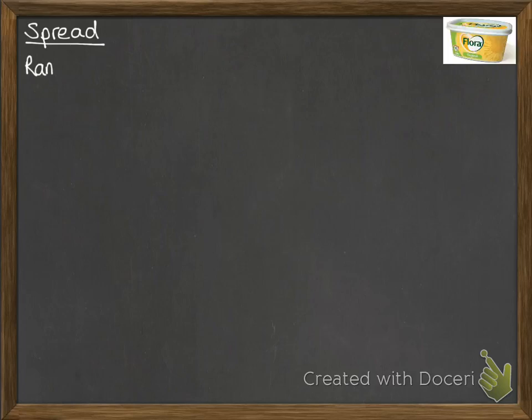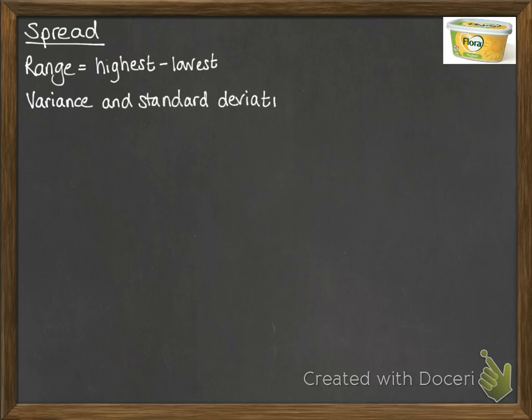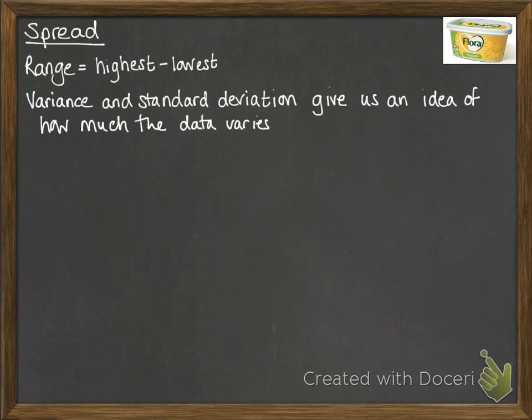So we need to be able to look at some ways to measure spread. The simplest is doing the range, which is the highest value minus the lowest value, but it doesn't give us an awful lot of information. What you need to be able to do is find the variance and the standard deviation.